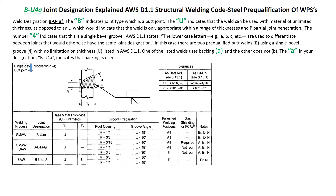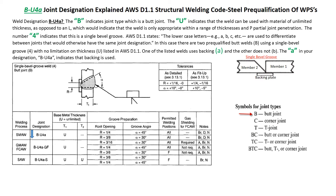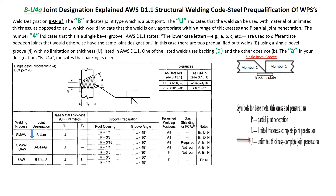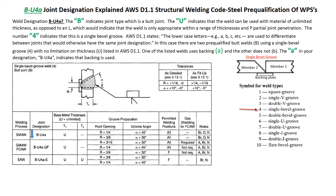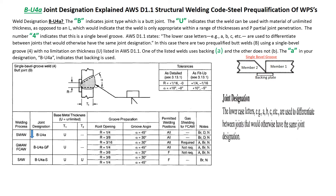As mentioned, we'll discuss one of the joint designations — let's discuss B-U4A. The letter B indicates the joint type, which is a butt joint. Following the B is the letter U, which indicates that the weld can be used with material of unlimited thickness, as opposed to the letter L, which would indicate the weld is only appropriate within a range of thickness; and P is partial joint penetration. Following the U is the number 4, which lets you know that this is a single bevel groove. And following the number 4 is the lower case letter A, which is used to differentiate between joints that would otherwise have the same joint design.